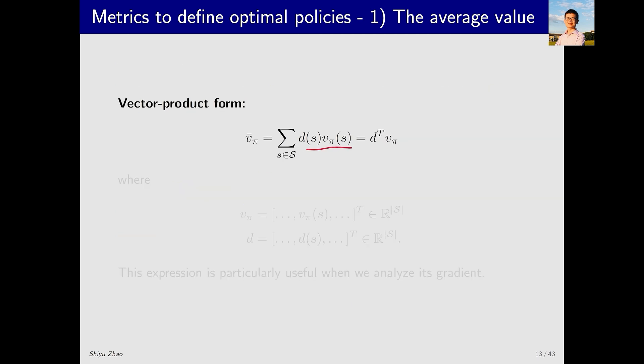This summation, where values are multiplied and then added, can clearly be written in a more compact form as the dot product of two vectors. One is d and the other is vπ. Here, d and vπ are two vectors, with each element corresponding to a state. In this case, d(s) corresponds to the weight or probability of state s, and vπ(s) corresponds to the state value of s. Such a simplified expression will be useful when we analyze how to calculate the gradient of v̄π.